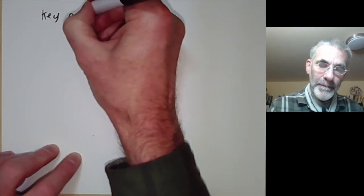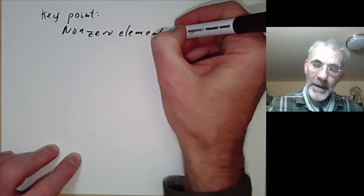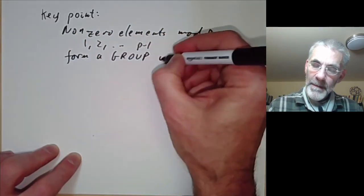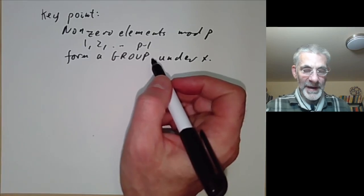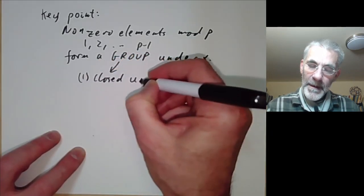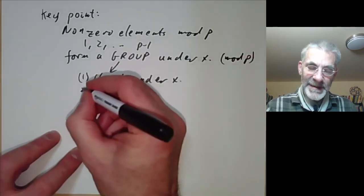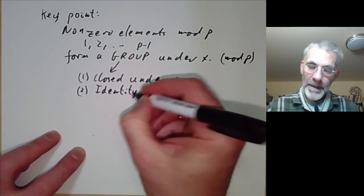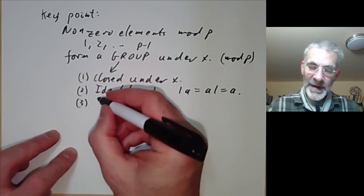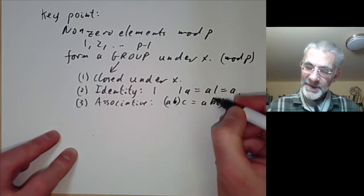The key point is that the non-zero elements mod p — that is, one, two, up to p minus one — form a group under multiplication. Saying they form a group means four conditions hold: first, they're closed under multiplication modulo p; second, there's an identity element one such that 1·a = a·1 = a; third, it's associative: (a·b)·c = a·(b·c), which is completely obvious.